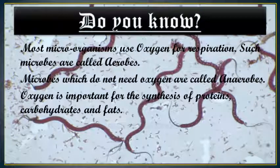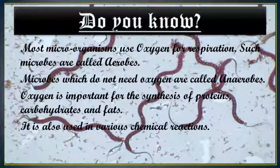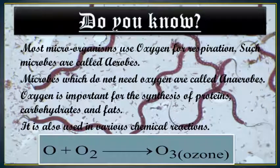Oxygen is important for the synthesis of proteins, carbohydrates, and fats. It is also used in various chemical reactions to form molecular compounds. Ozone is produced from oxygen through various atmospheric processes — that means oxygen combines with molecular oxygen to form O3, which is ozone, and different atmospheric processes are involved in its formation.